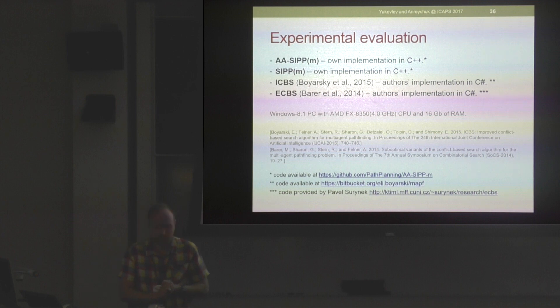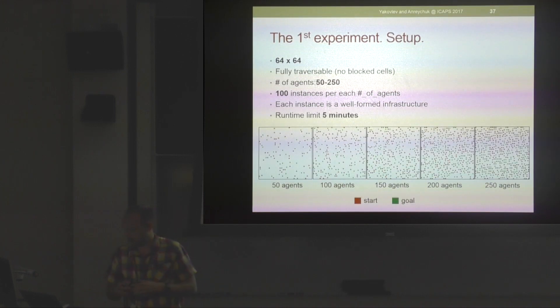We've implemented the algorithm and evaluated it experimentally in a series of simulated tests. We compared it with other algorithms that rely on cardinal moves only, namely with regular SIPP dubbed SIPP(m), and also with two state-of-the-art algorithms, so-called conflict-based planners CBS. It was ICBS, which always returns optimal solution, and ECBS is the suboptimal version.